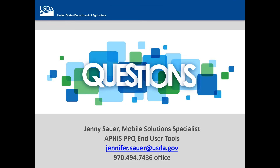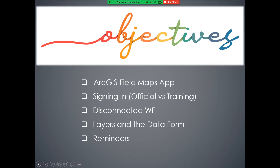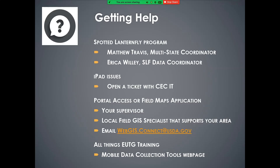Question from Charlotte: where do you get help getting maps added? To get access to a map, have your supervisor submit the request to the End User Tools group. It's sensitive data, so we make sure the right people get access to the right maps. Your supervisor could also go through the GIS specialist or email the request directly. That's a great question — make sure your supervisor submits that access request.